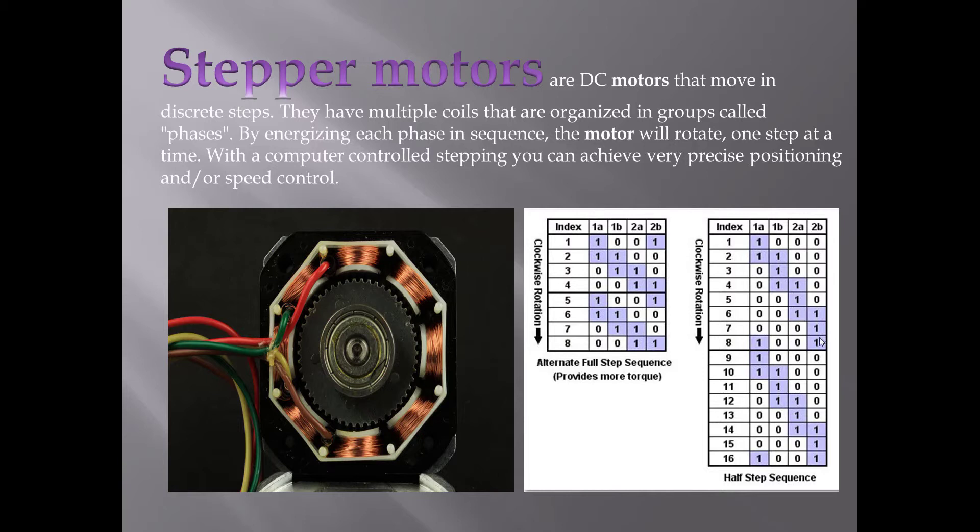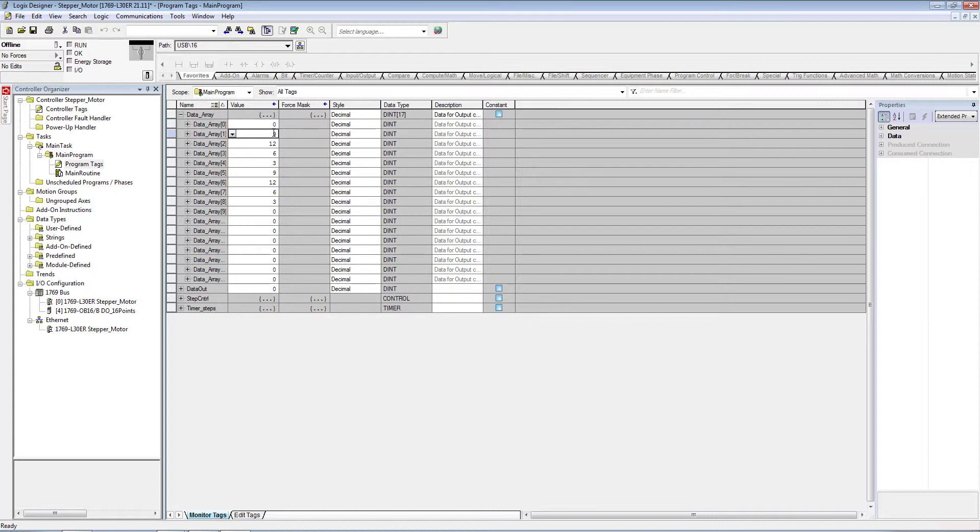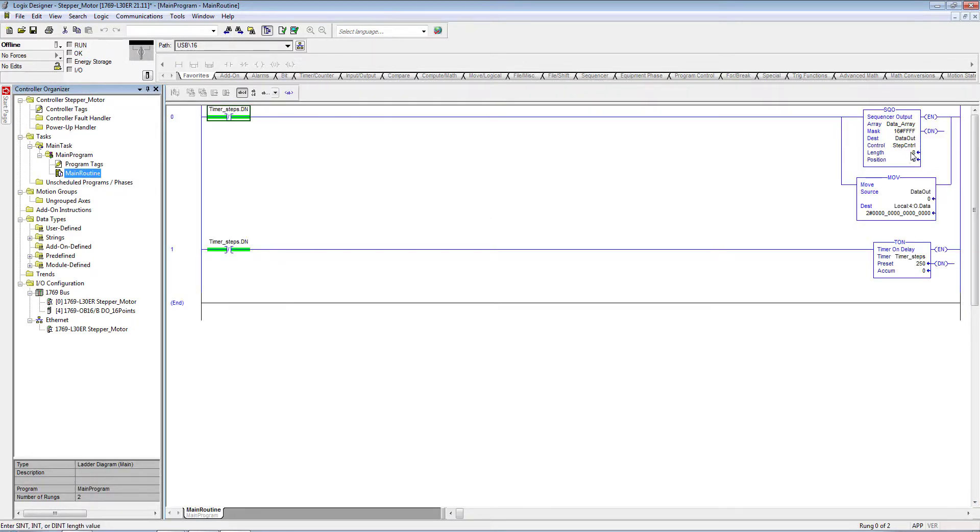Then it has to repeat itself. Let's copy these values to the data element array. First one should be zero, then 8, 9, then it has to repeat itself: 12, 4, 6, 2, 3, 1.